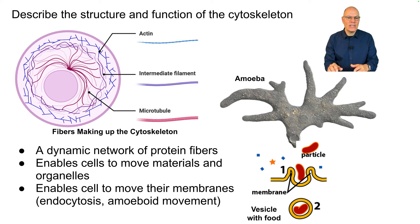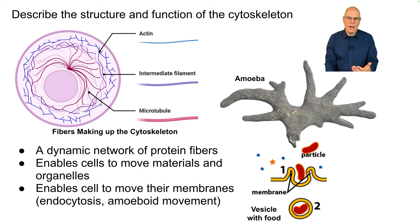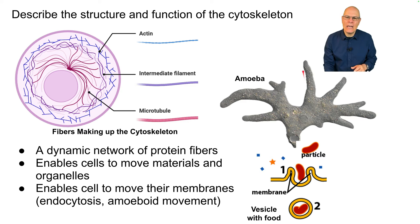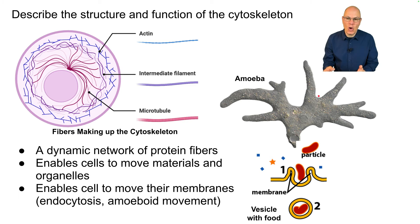The cytoskeleton also enables the cell to move its membrane to do things like endocytosis, where cells engulf things by moving their membrane, or to move their entire bodies. This is an organism called an amoeba, which moves by extending parts of its membrane over the surface to crawl — and it does all that through the cytoskeleton.